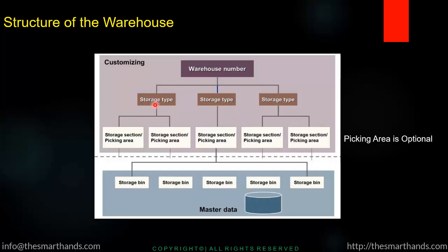Under each storage type we have a storage section — we can have one storage section or more than one. In parallel we also have something called a picking area, which is at the same level as the store location. The picking area is optional and we'll talk about this in detail later on.